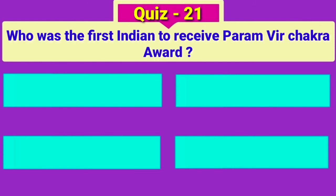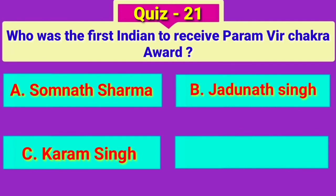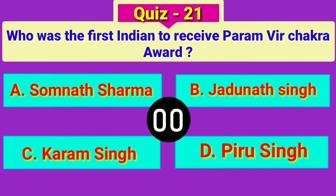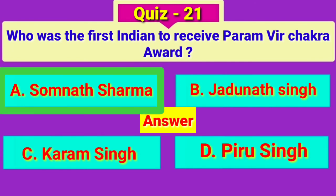Who was the first Indian to receive the Param Vir Chakra Award? Answer: Somnath Sharma.